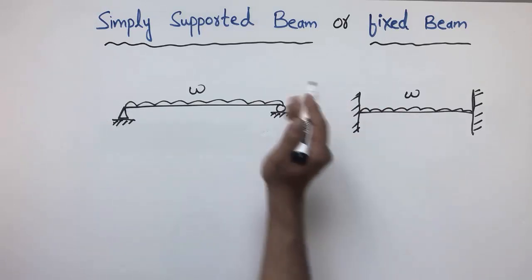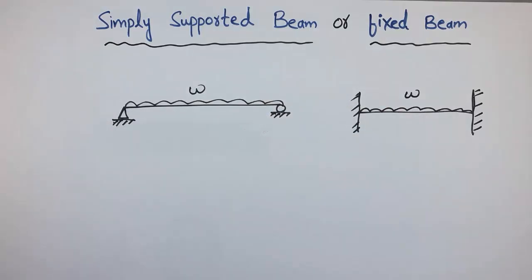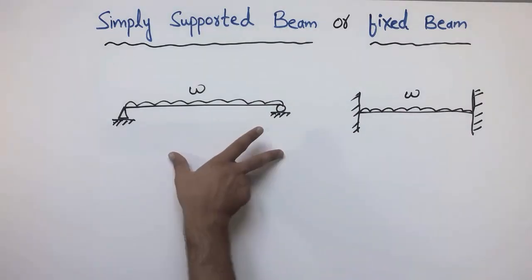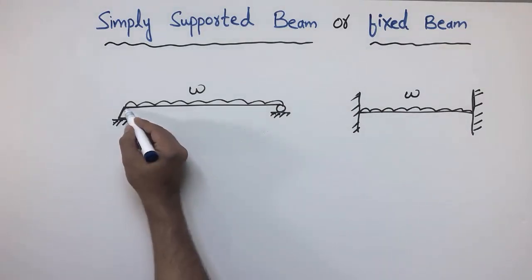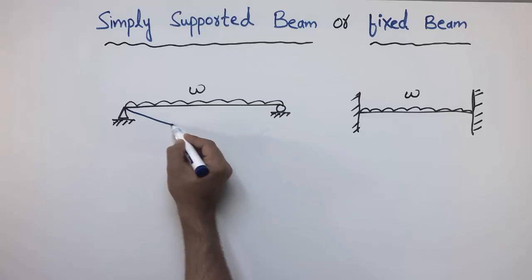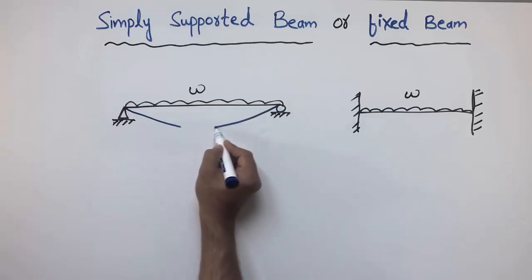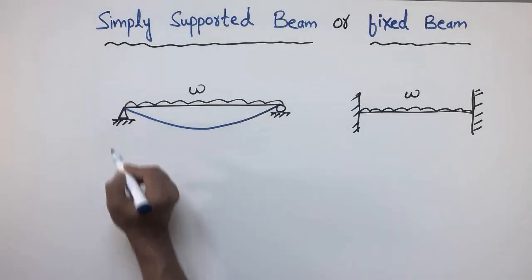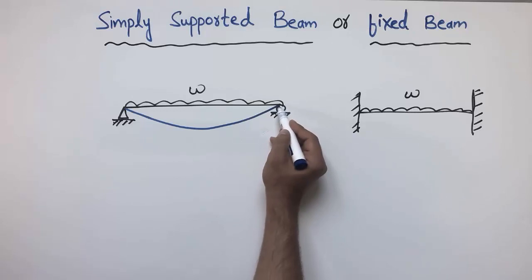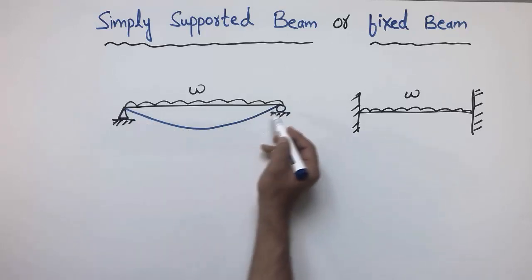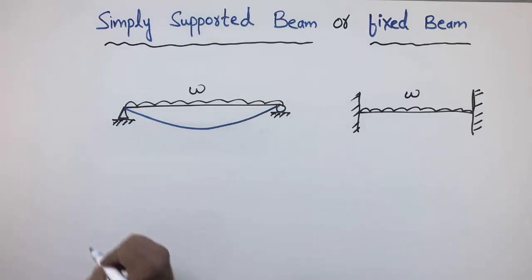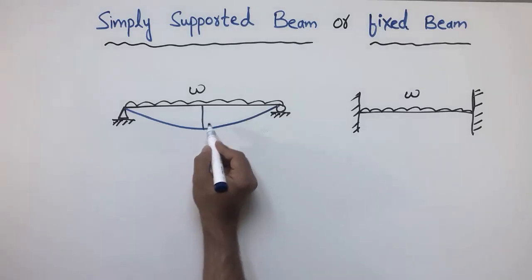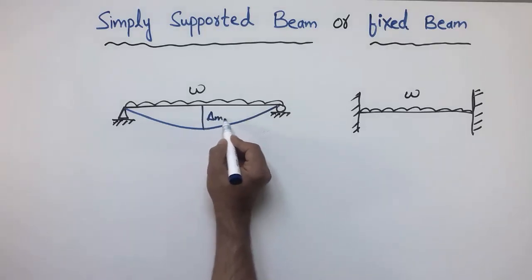If I draw the deflected shape of the simply supported beam, it will have a high deflected shape with high deflection at the middle of the beam, as can be seen. There is no deflection at both ends because the hinge and roller supports provide resistance to deflection.